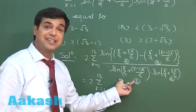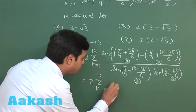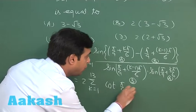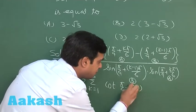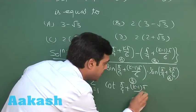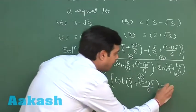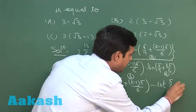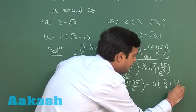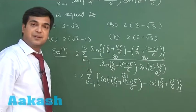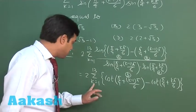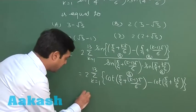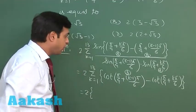Giving me cot(b), that is cot(π/4 + (k-1)π/6) minus cot(π/4 + kπ/6). This is clear. Now I can substitute the value for k from 1 to 13 and can see the pattern here. We can see the pattern here.